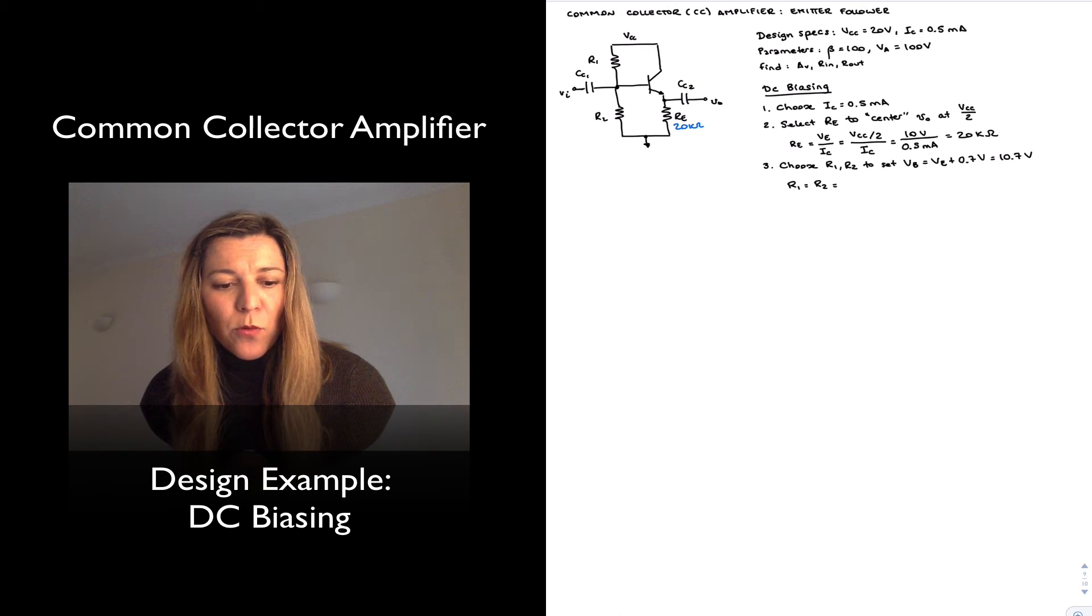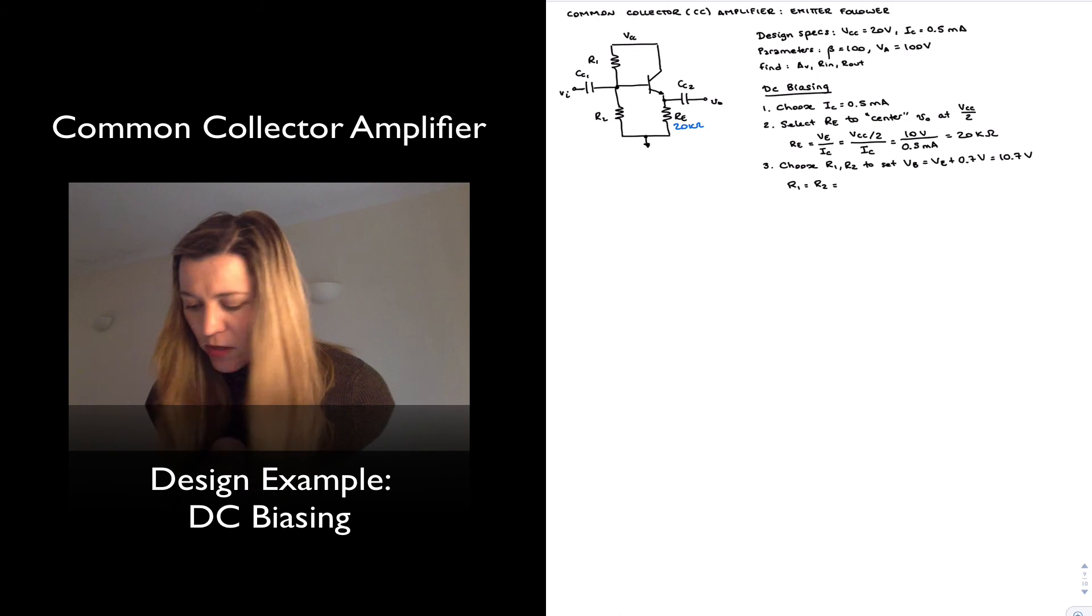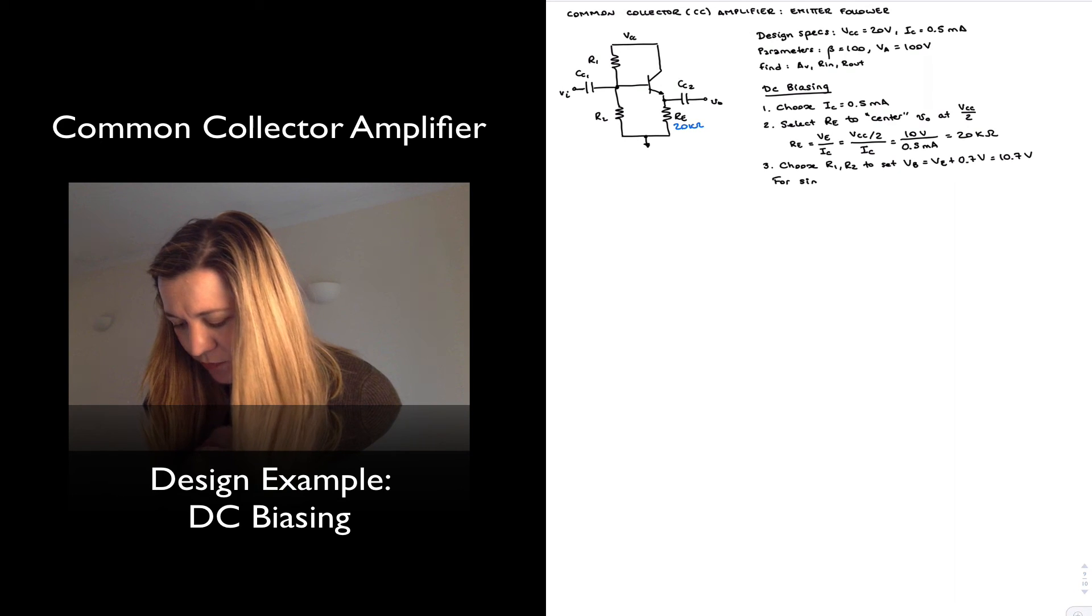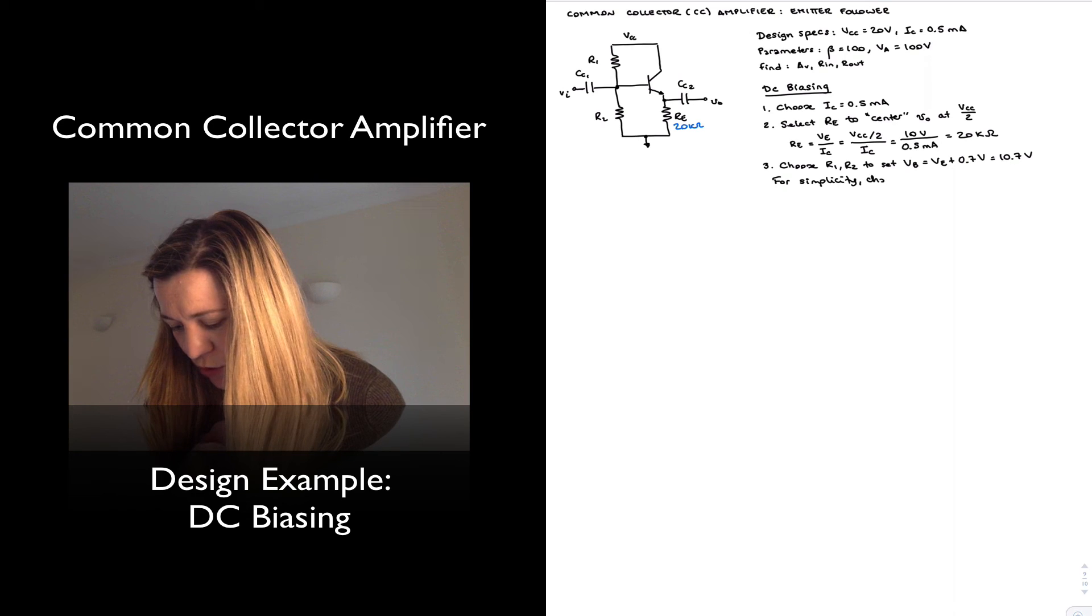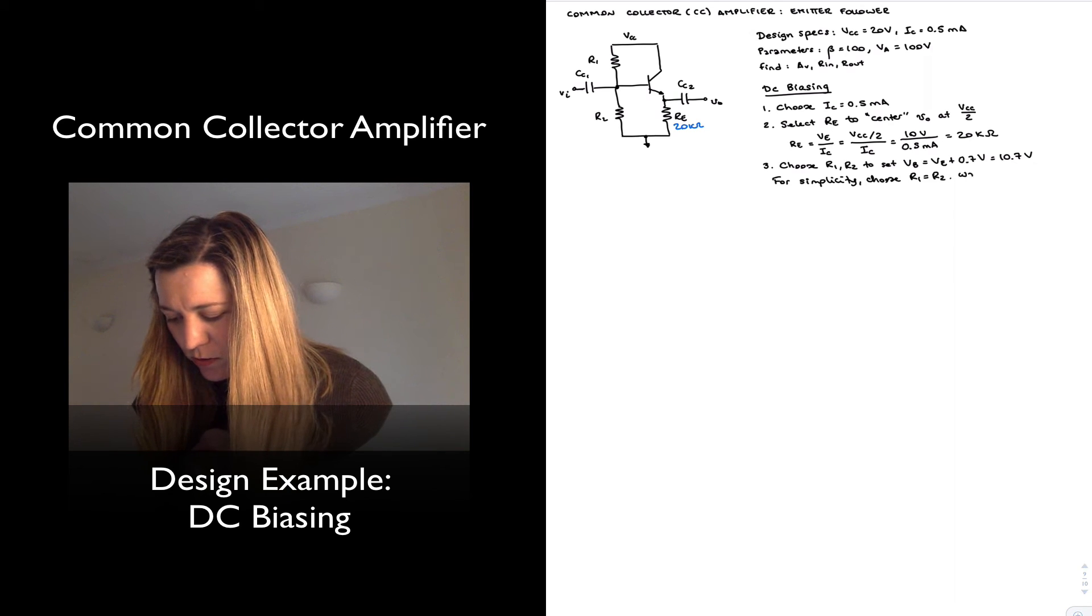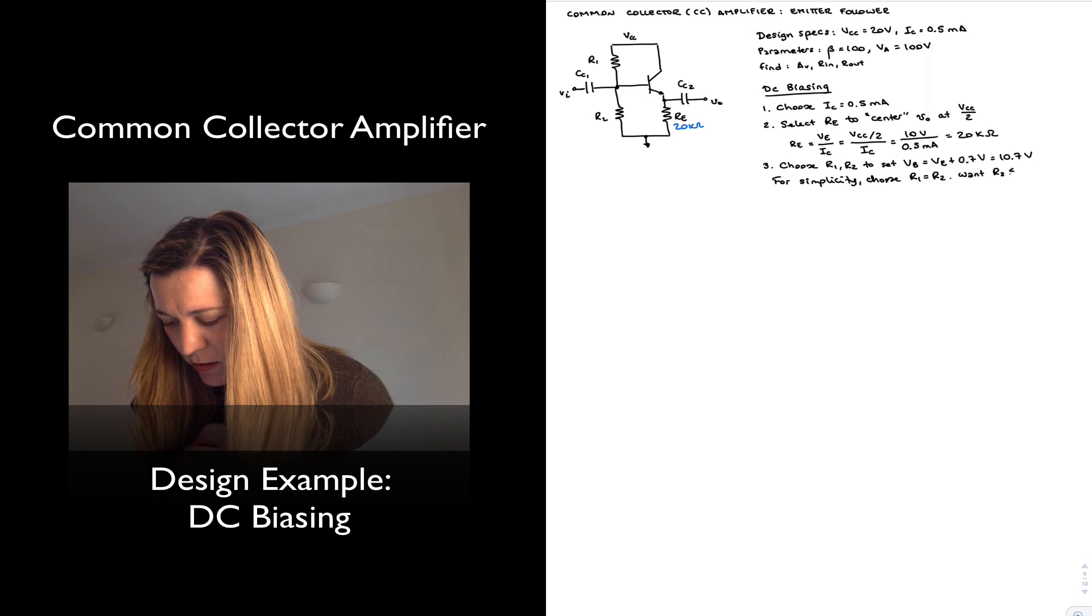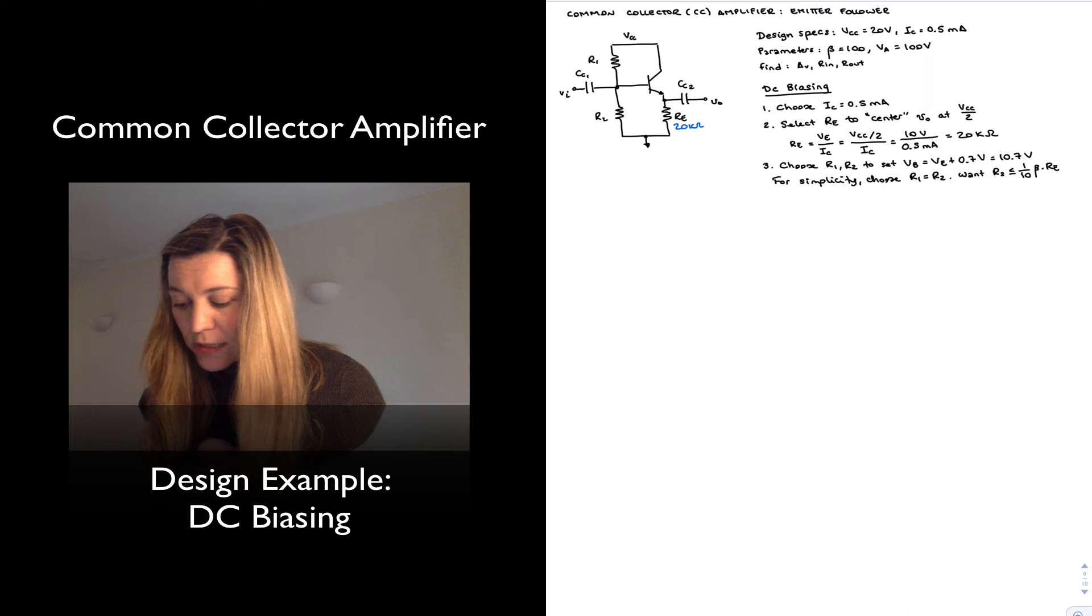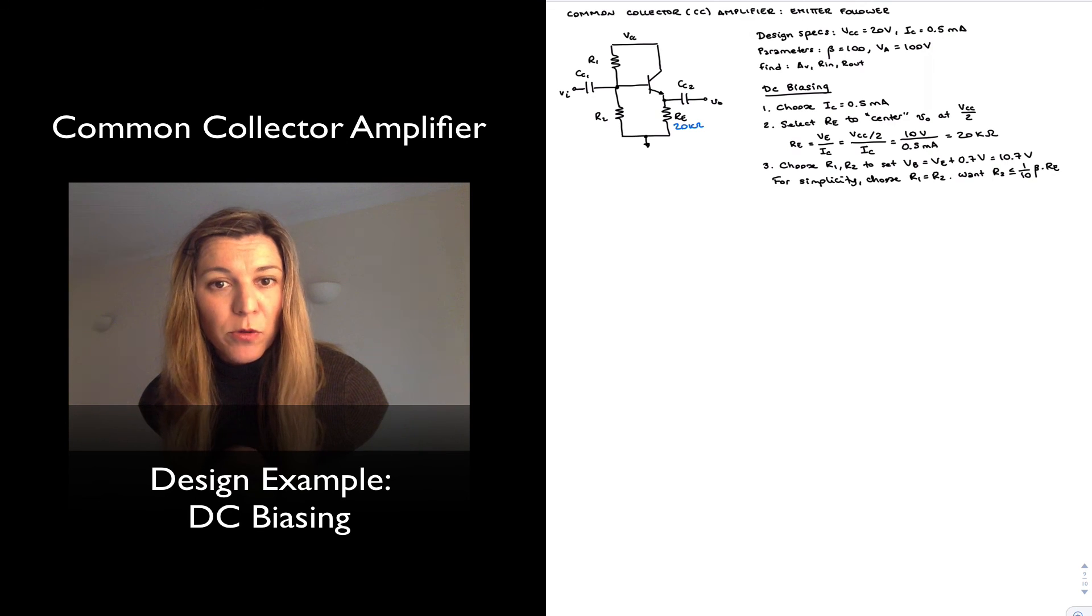When we were selecting these values, we wanted R2 to be much smaller than beta times RE. For simplicity, I'm going to choose R1 equal to R2, and I want R2 to be less than or equal to one tenth of beta times RE. That means I want R2 to be less than or equal to 200 kilo-ohms. That will be one tenth of beta times RE.